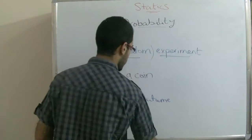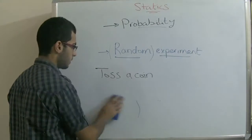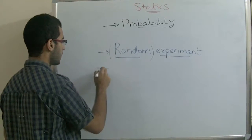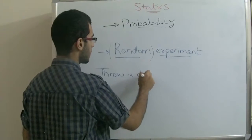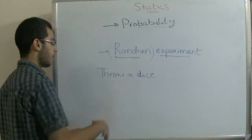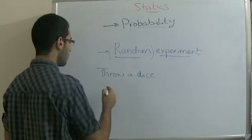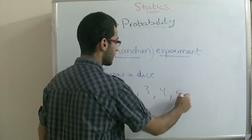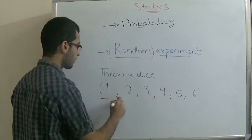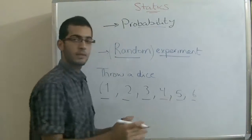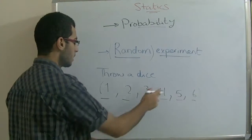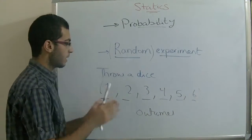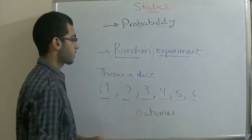Another example: if you roll a dice, the possible outcomes will be 1, 2, 3, 4, 5, and 6. Any number of these may appear on one of the six faces of the dice — these are the outcomes. But we cannot detect which of these numbers will appear.